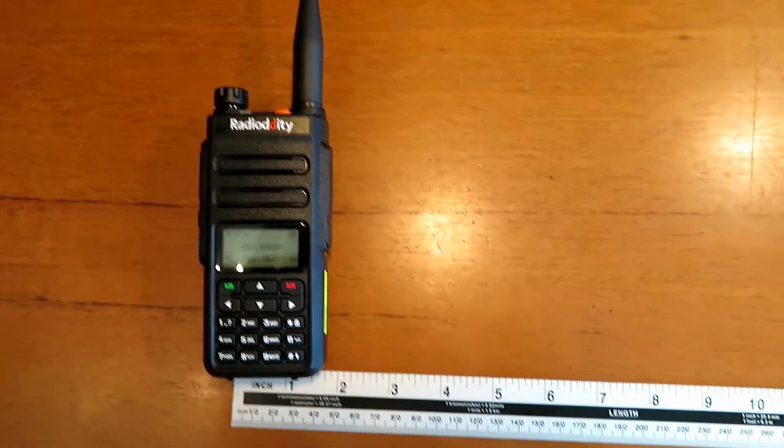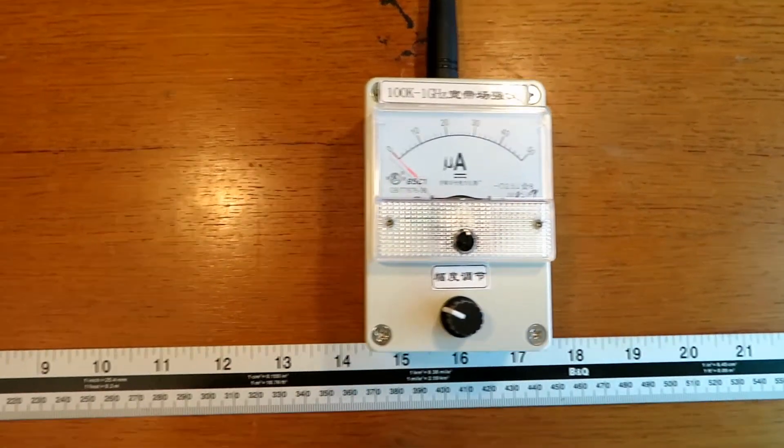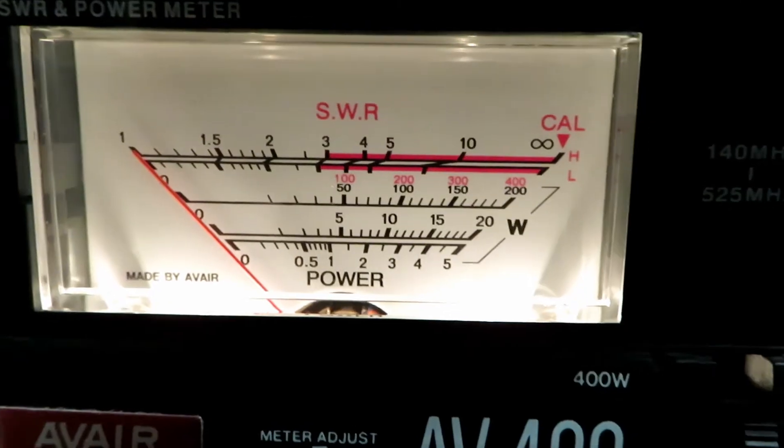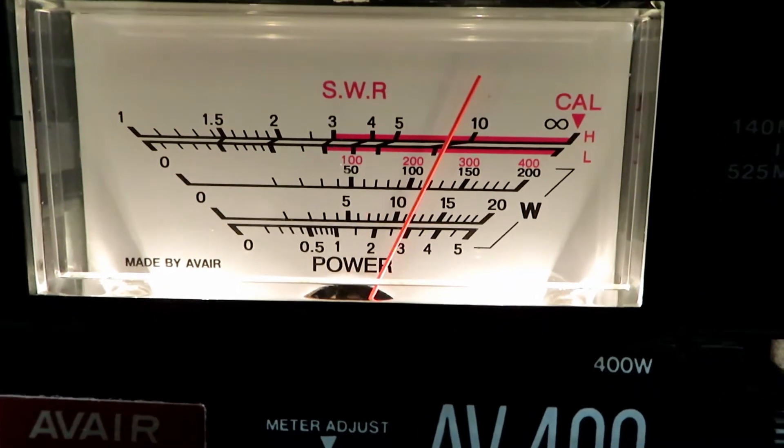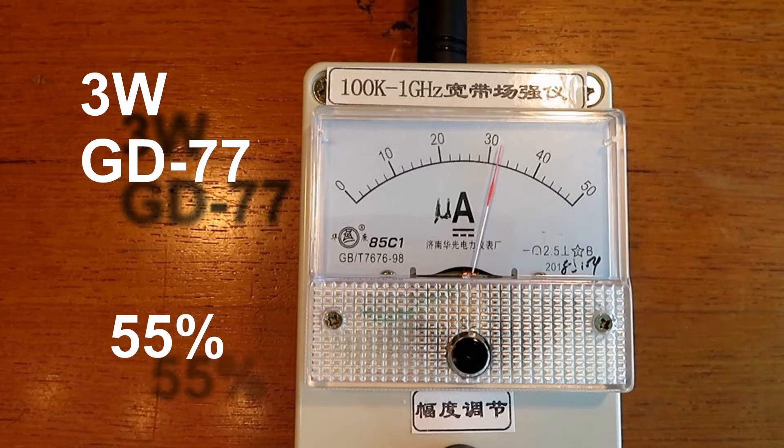We're going to test the relative field strength of these radios using this as a reference. We know this radio from recent testing outputs 3 watts at UHF. If you look at the last video you'll see that. Let's get on with the test. That radio gives us a field strength of just over 30 at this fixed distance.